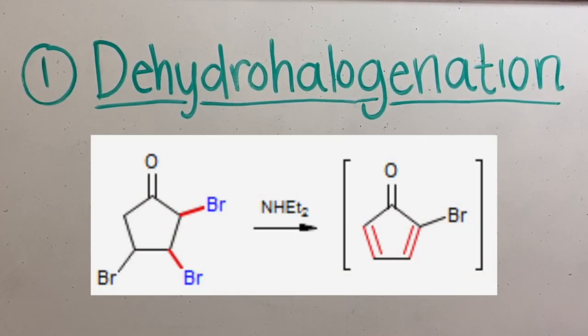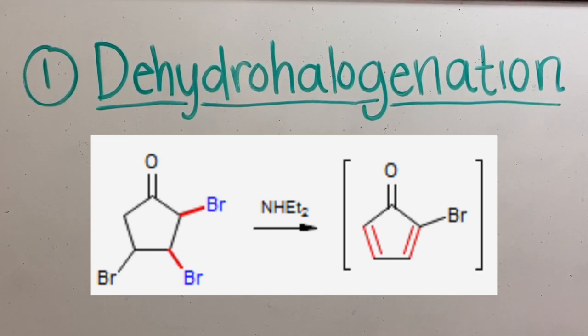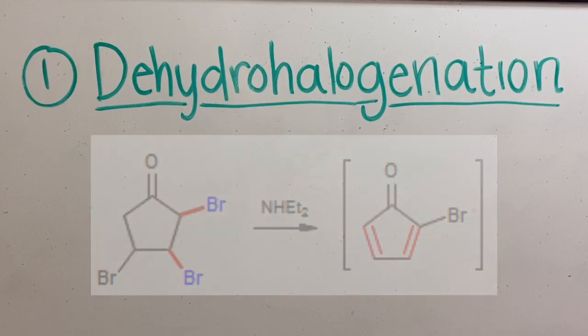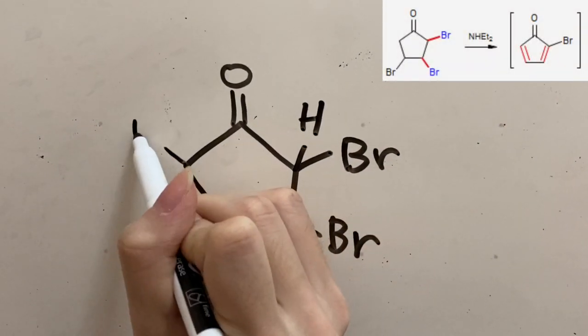In this reaction, we see that there are three bromides on this ring, and they form two alkenes between them, with a bromide left over. To visualize this, I drew in the hydrogen atoms on the carbons.